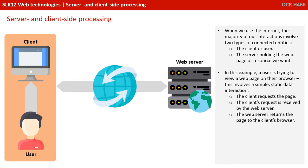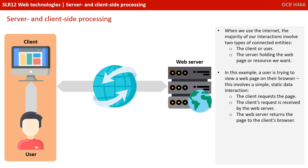In this example, a user is trying to view a web page on their browser. This involves a simple static data interaction. The client requests the page, the client's request is received by the web server, and the web server returns the page to the client's browser.